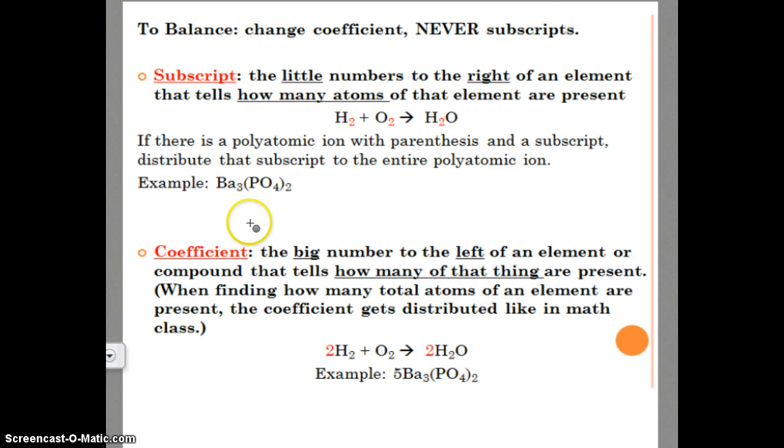I do want to show you something with polyatomic ions. If there's a polyatomic ion with parentheses and a subscript, distribute that subscript to the entire polyatomic ion. This two, because of these parentheses, it's the whole polyatomic ion family. That means there's two copies of PO4. I have three bariums. And this isn't the correct way to draw this, but it's going to work for now. I have another PO4 family because it's a polyatomic ion.